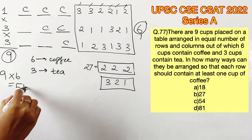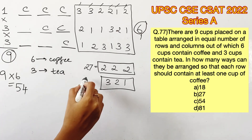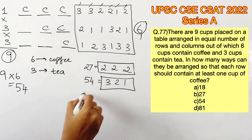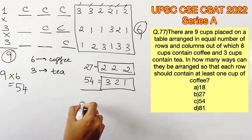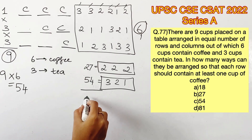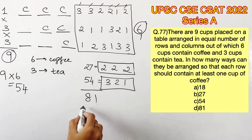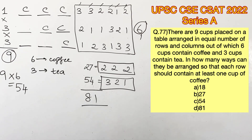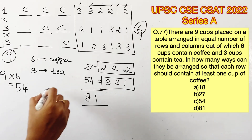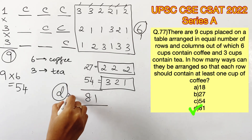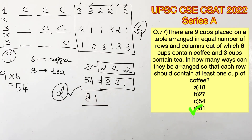We also had six possibilities with the number distributions, so multiplying six by nine gives 54. Adding 27 and 54, we get 81, which is the total number of ways the coffees can be arranged with at least one coffee per row. Therefore, option D is the correct answer.